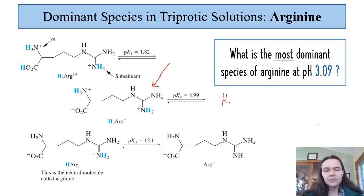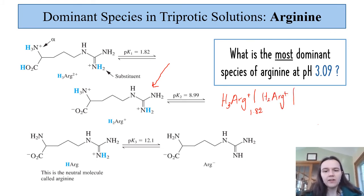In the case of the ladder diagram we have our H3arg+, we have the 1.82, we have our H2arg+, and we have the next pKa of 8.99, H arg our neutral intermediate. So we have two intermediates here, and then finally at pKa of 12.1 we get ourselves to arg-.